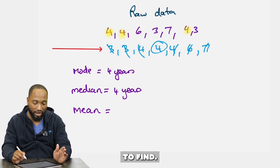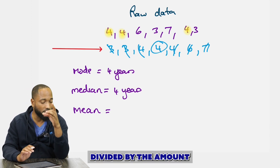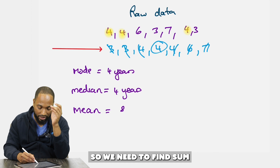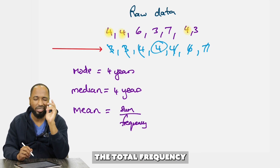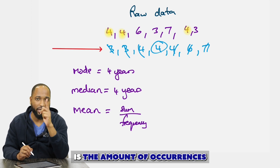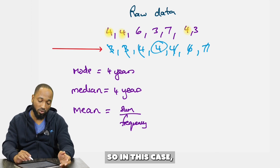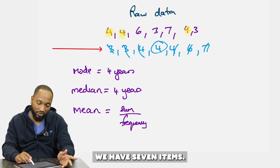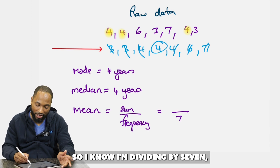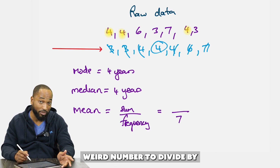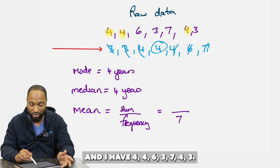The mean can be tedious to find. It's the sum of all numbers divided by the total frequency — the amount of numbers. We have seven items, so we divide by 7. Our numbers are: 4, 4, 6, 3, 7, 4, 3.